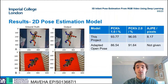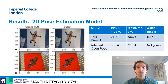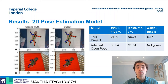Furthermore, the synthetic nature of the data coupled with the lack of clothing means the distinction between the crossing limbs is made even more challenging. The table on the right shows the comparative performance of this project's model to the current state of the art — the empirically adapted OpenPose model — on the benchmark mini RGBD dataset.